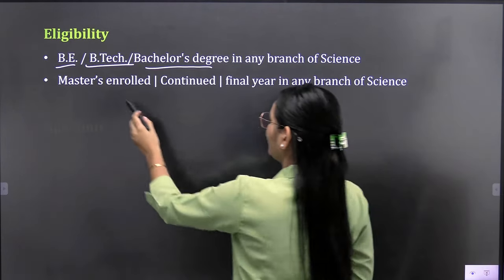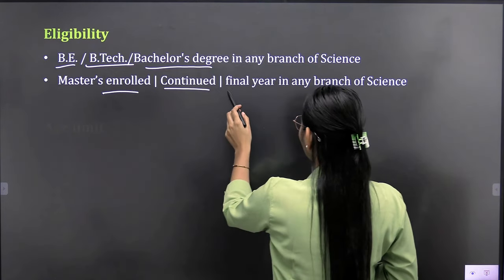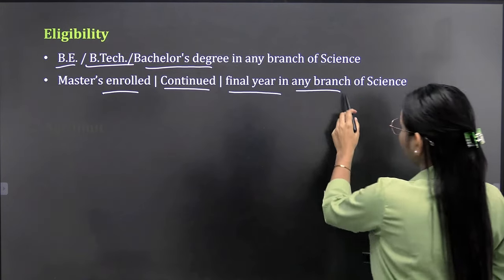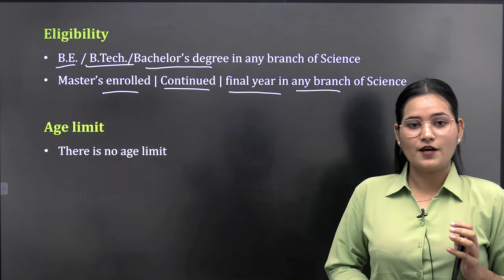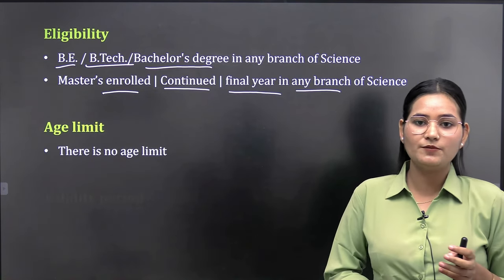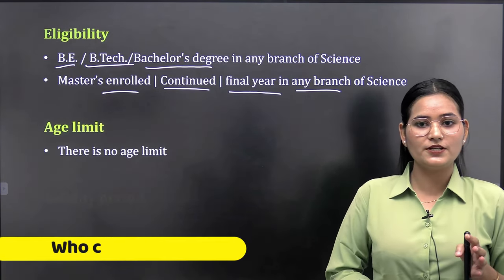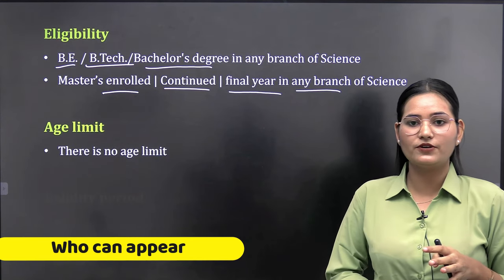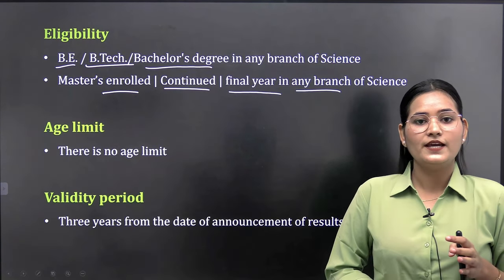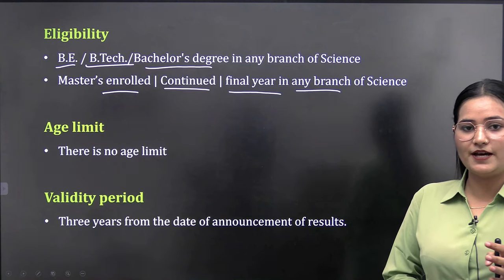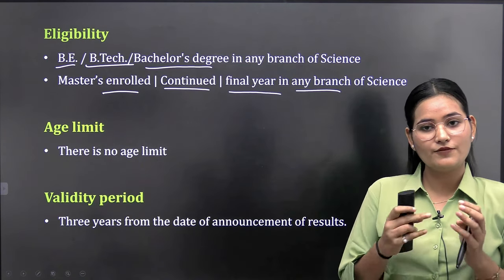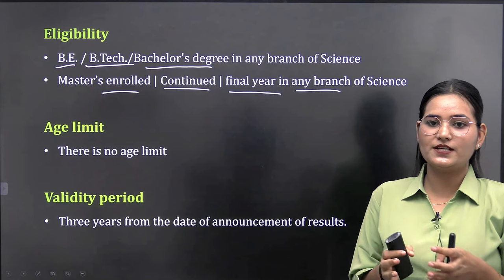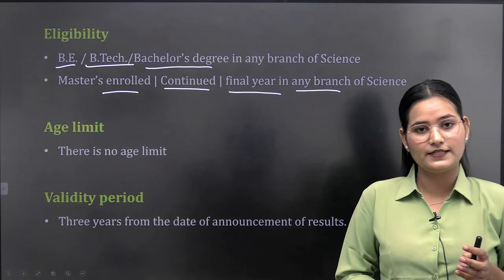If you are enrolled in a Master's program, you can be a final year student of any branch of science. Regarding age limit, there is no age limit. You are always eligible for GATE life science examination. When your result is announced, the validity period is three years from that date.